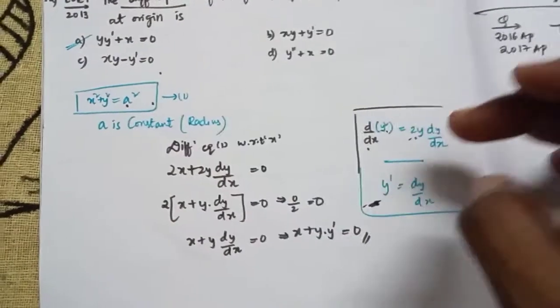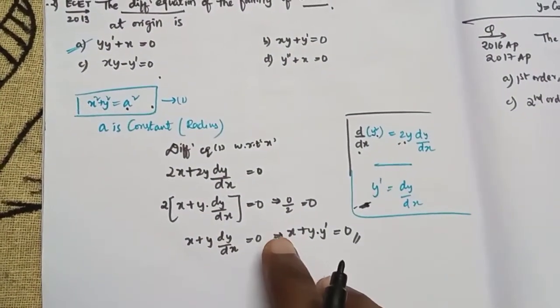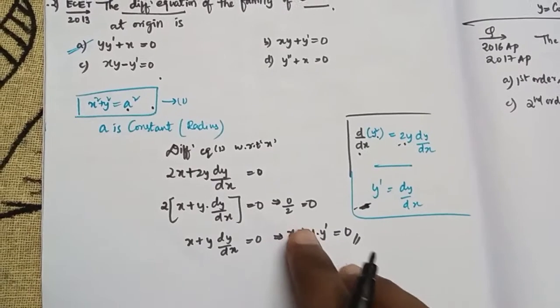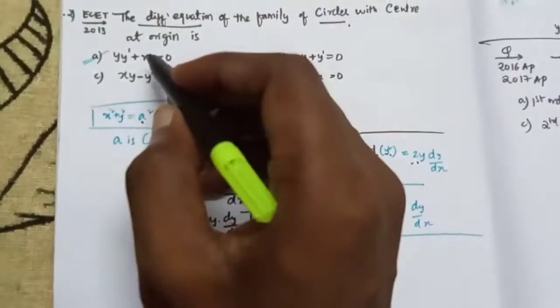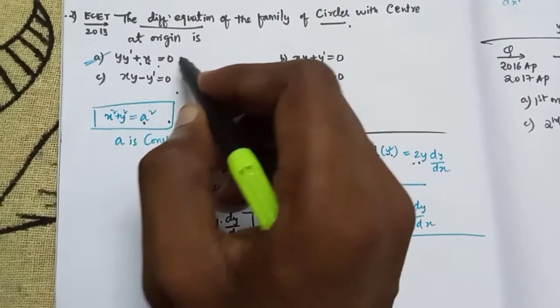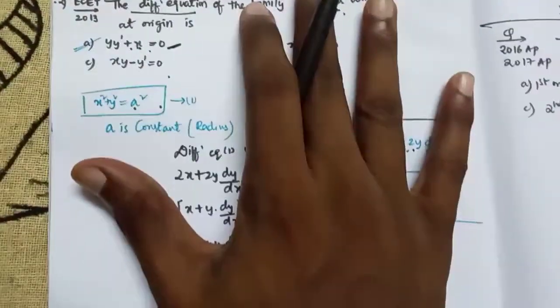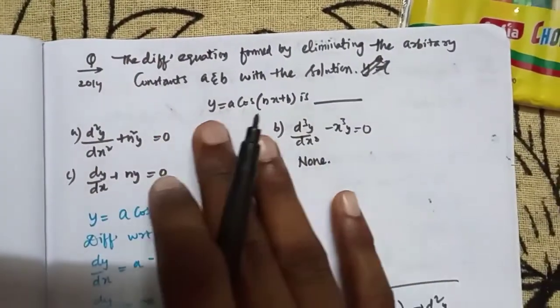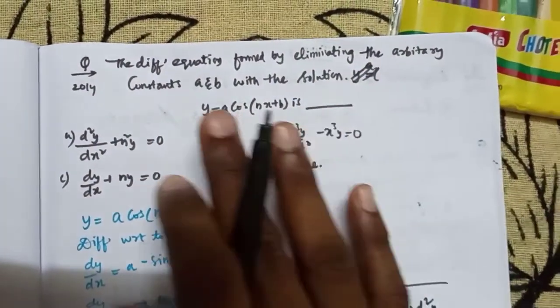So we get x plus y into dy/dx equals zero. That is the answer: x plus y·y' equals zero.